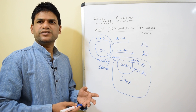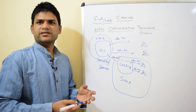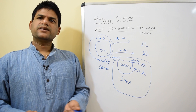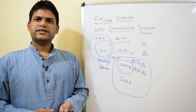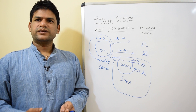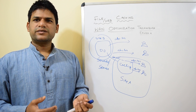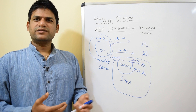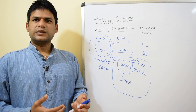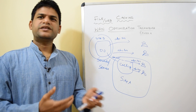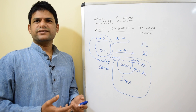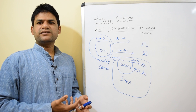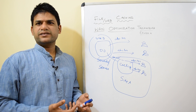In those cases, maybe you need to choose deduplication and other lossless compression techniques instead. When it comes to file caching, it depends on your use case and each person will have their own affinity towards this technology. As I said, this is one of the most traditional ways to optimize your WAN traffic.